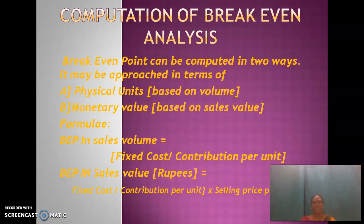After crossing the BEP sales volume, the company starts making profit. The formula for BEP in sales value — that is, in rupees — takes the result of fixed cost divided by contribution per unit and multiplies it by the selling price per unit, which yields the sales value in rupees.